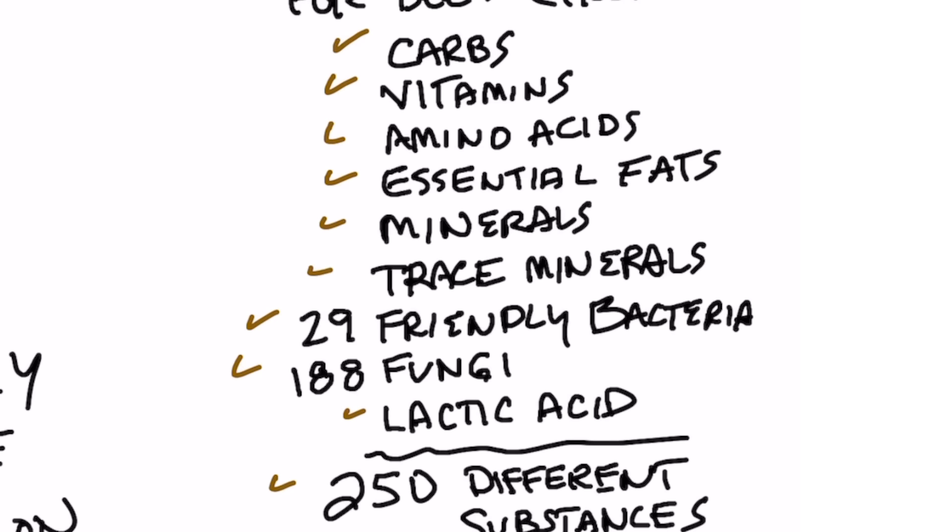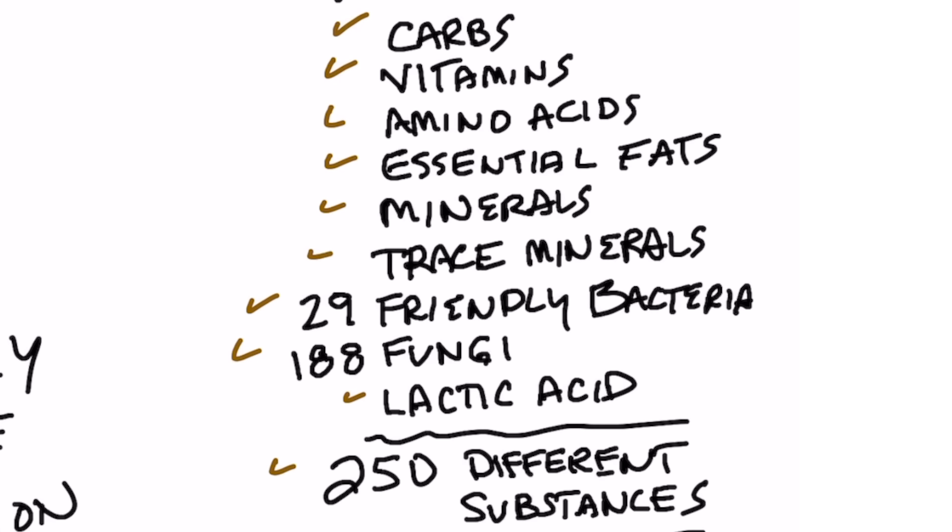It has over 29 friendly bacteria that were identified, and it has over 188 fungi which are friendly to our systems. There's also fermented byproducts in bee pollen which give it lactic acid to fight off pathogens.